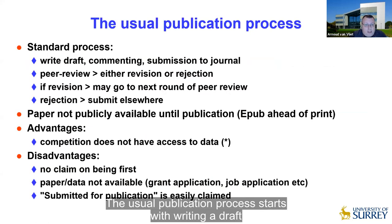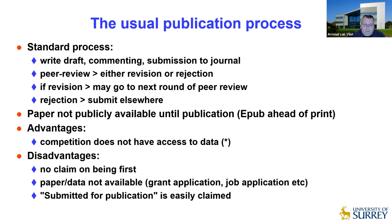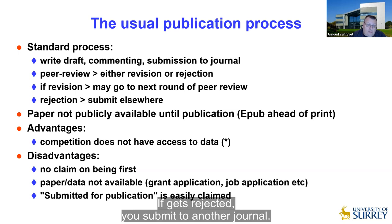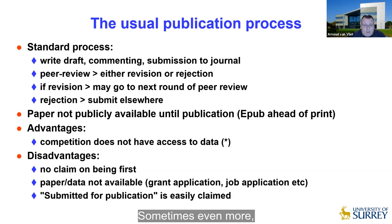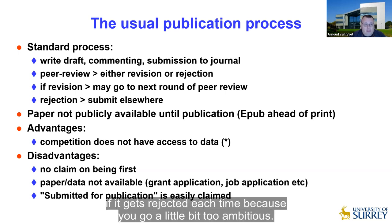The usual publication process starts with writing a draft of your paper, you get comments from your co-authors, and at some point it's ready to submit to a journal. You then get peer review — it either gets a revision or rejection decision, and if it's a revision you go to the next round of peer review until it is accepted. If it gets rejected you submit to another journal, and this process can easily take between six months and two years, sometimes even more, especially if you go through multiple different journals because you were a little bit too ambitious.